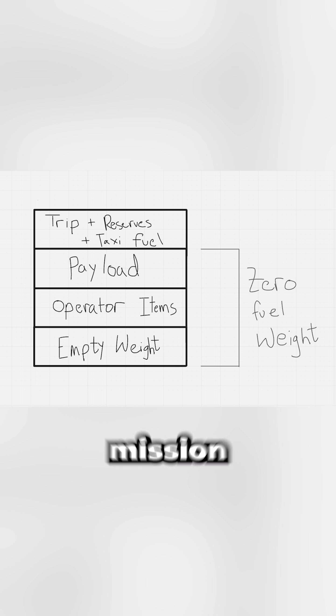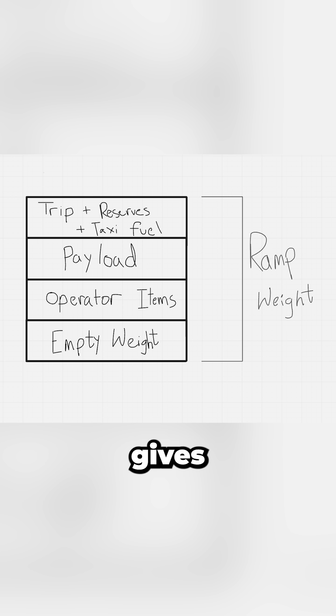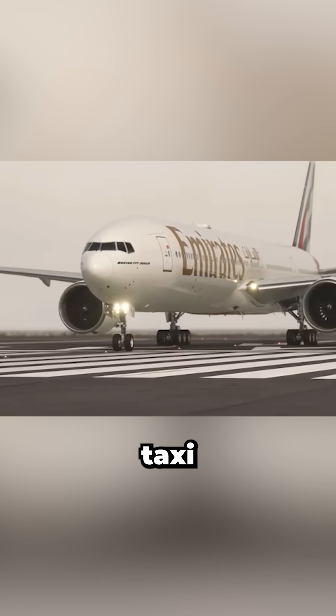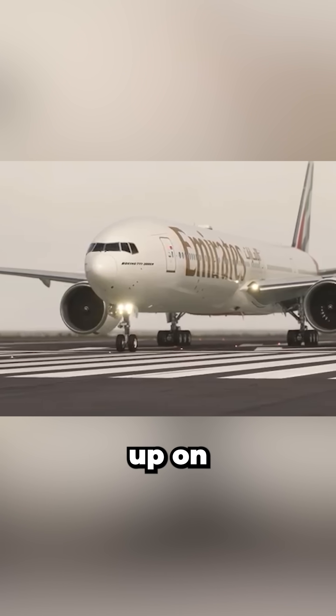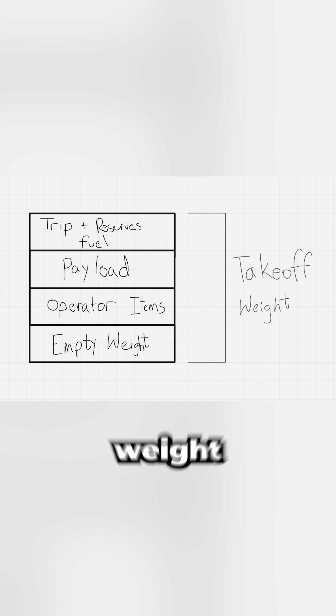Adding the usable fuel for the mission, including reserves and the fuel needed to taxi, gives you the ramp weight. After burning taxi fuel and lining up on the runway, the airplane is at its takeoff weight.